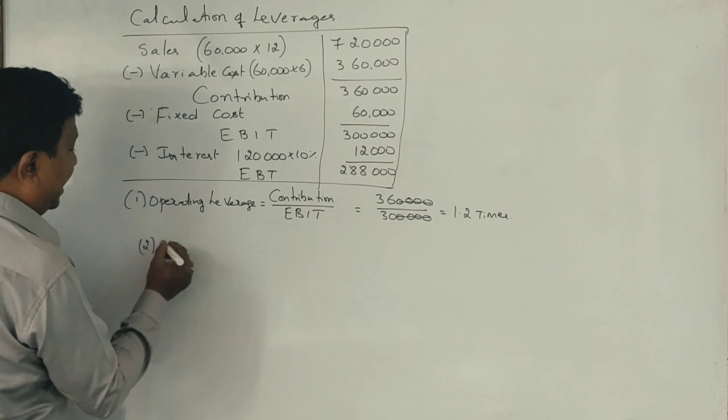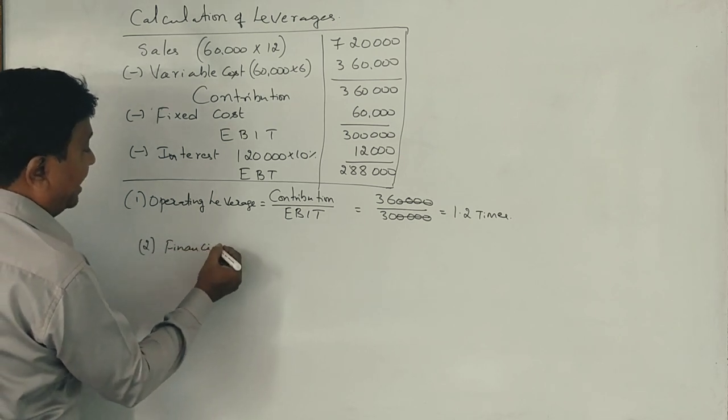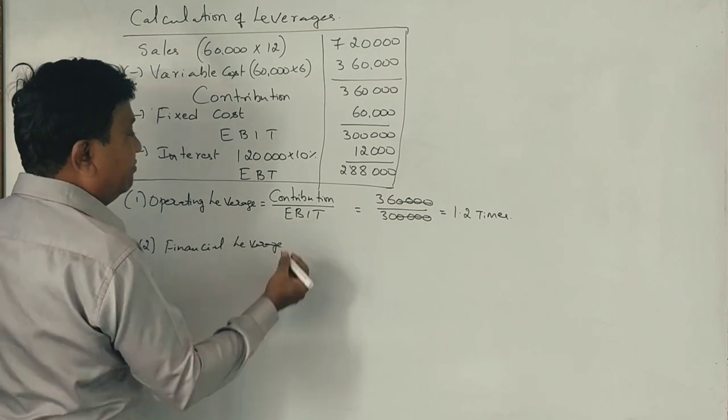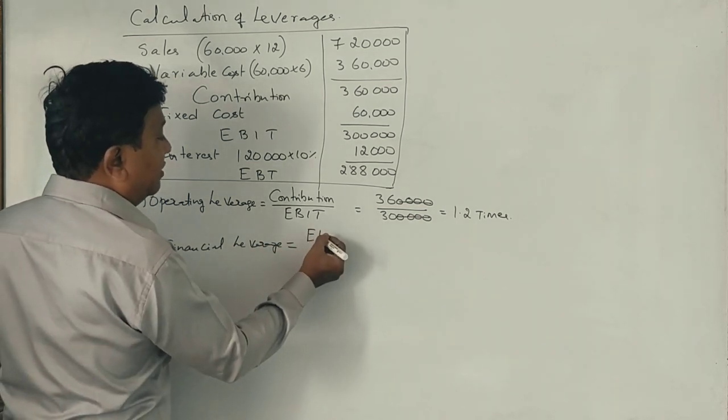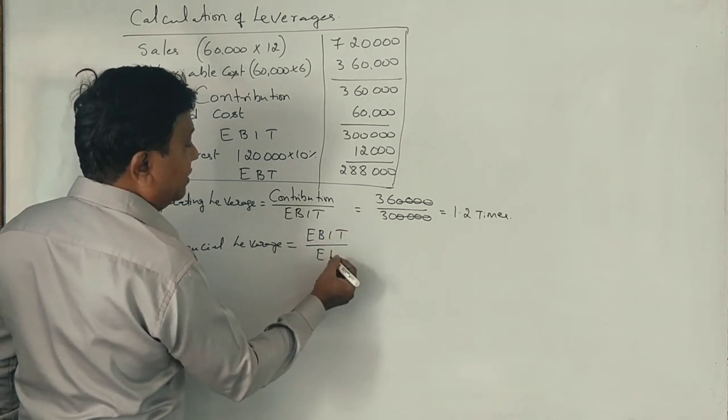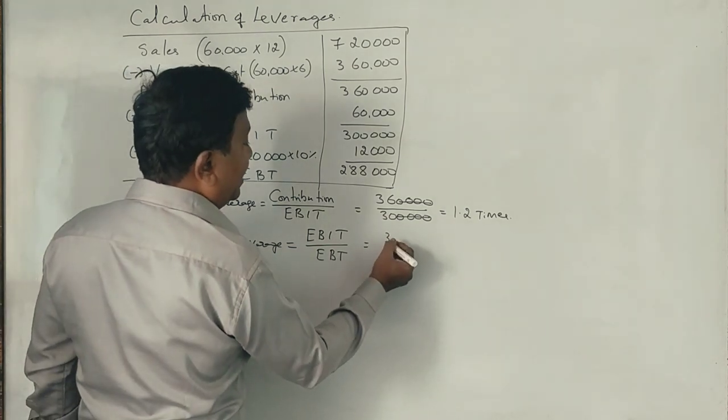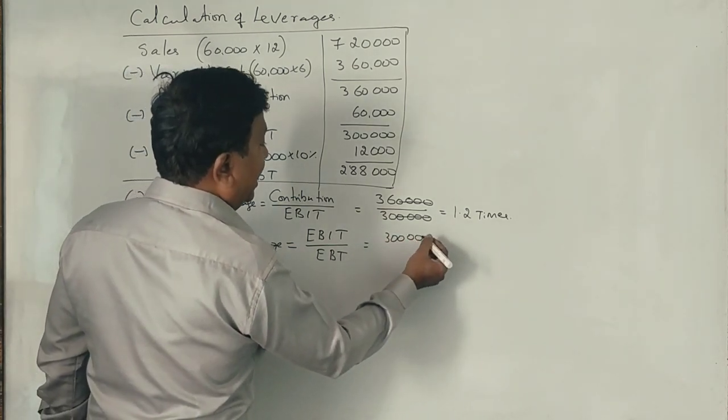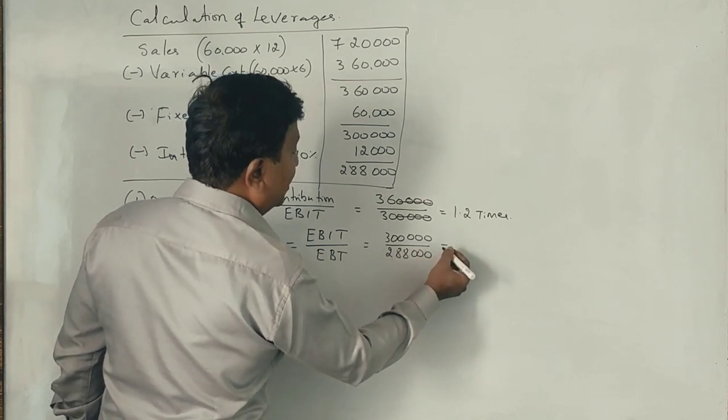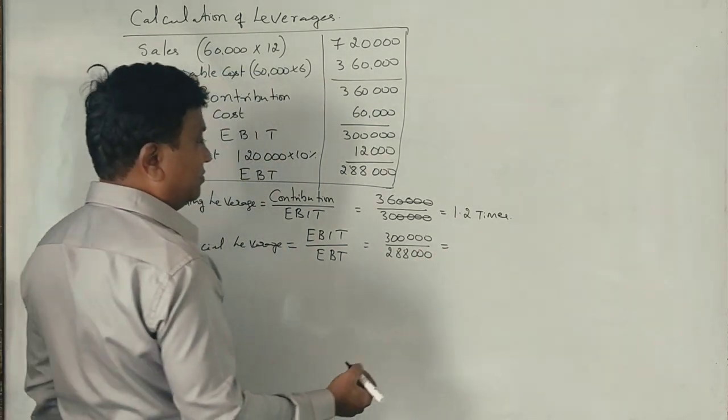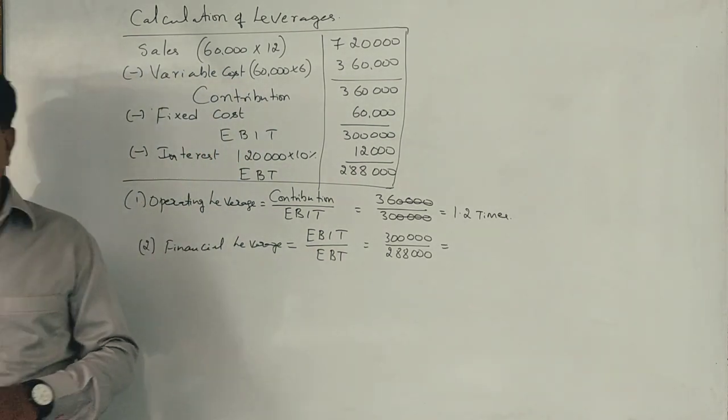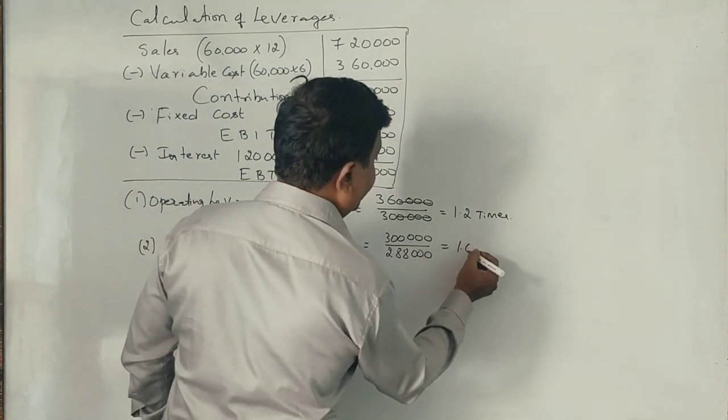Next is financial leverage. See, in financial leverage, what is the formula for financial leverage? EBIT divided by EBT. See, EBIT we have 3,00,000 rupees. And EBT we have 2,88,000. Tell me how much? 1.04 times.